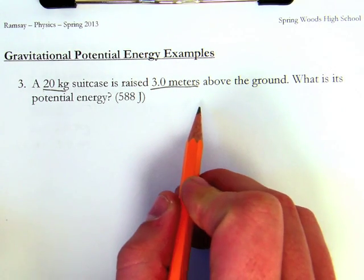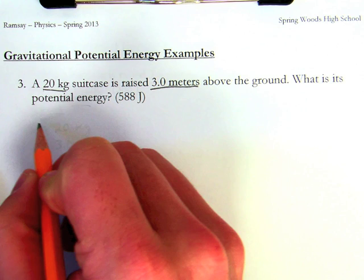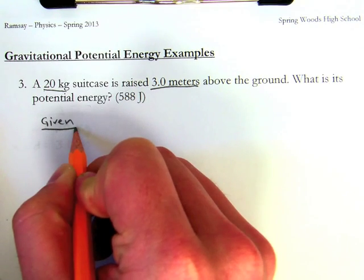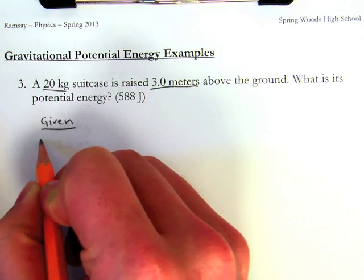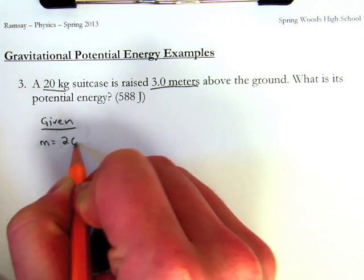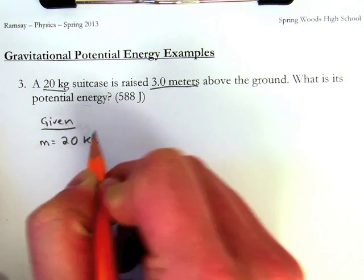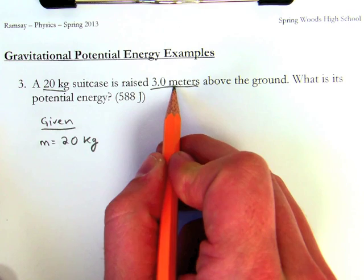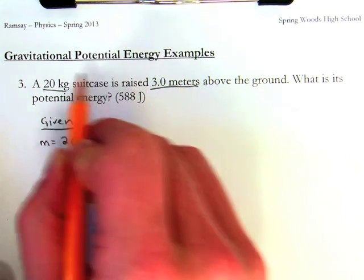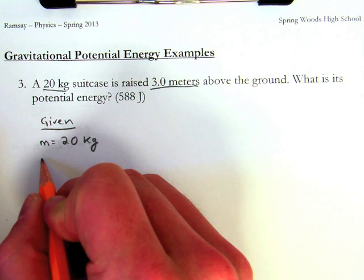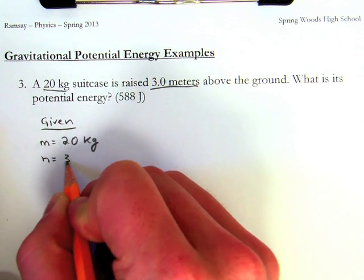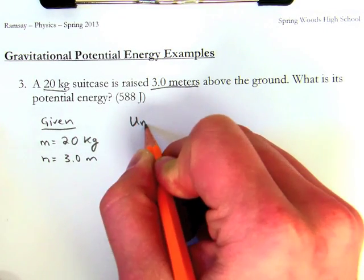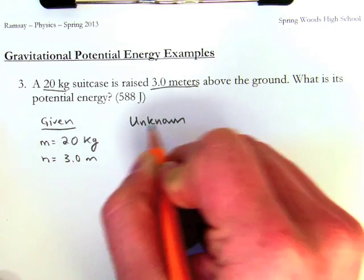So what is its potential energy? I'm going to start by writing down what I'm given. The suitcase has a mass of 20 kilograms. It's raised 3 meters above the ground. With potential energy, I know that what matters is height, so the height is 3 meters. My unknown here is my potential energy due to gravity.